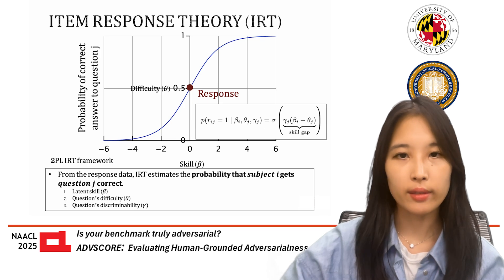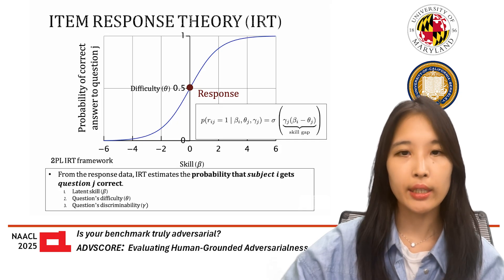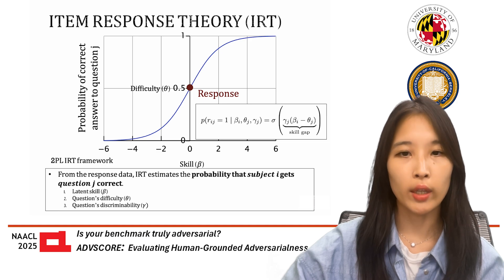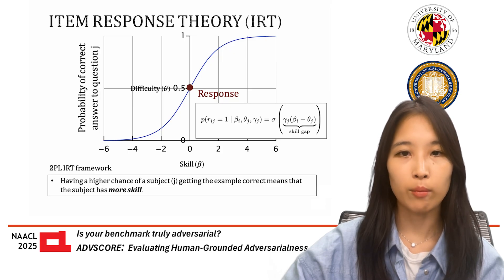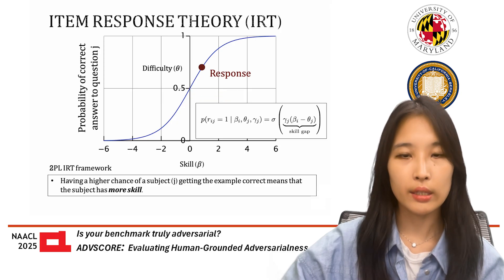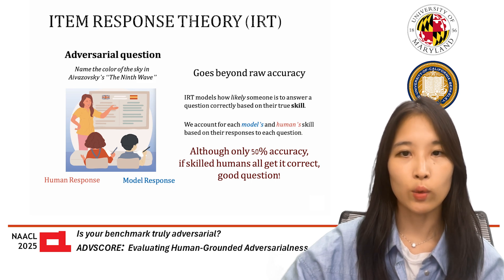IRT is a statistical model that resembles logistic regression. It models the probability of a correct response using a sigmoid function, denoted by sigma in this equation. This is the 2PL framework of IRT. For every subject i and question j, IRT estimates the probability that i gets j correct based on the subject's latent skill and the question's difficulty and discriminability. This chart shows the probability of models and humans getting the answer correct to the same question. If the skill is equal to the difficulty, the probability of getting the question correct is 0.5. As skill increases, the probability approaches 1.